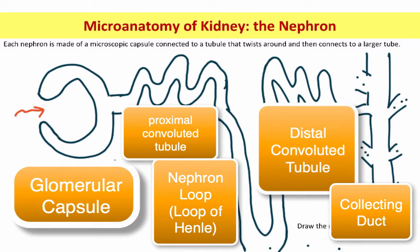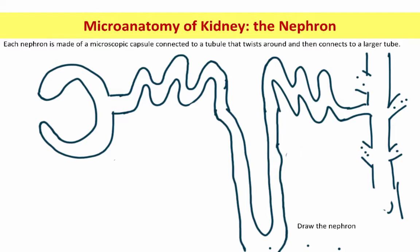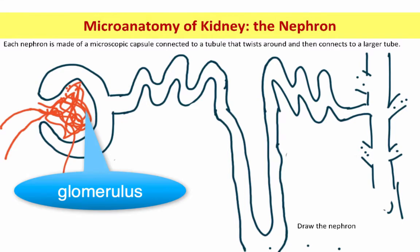Now we have to draw some blood vessels, because the function of the kidney is to filter blood, and the nephron is the filtering unit. We have an arteriole that carries blood into a specialized capillary bed. That capillary bed is called the glomerulus — I believe glomerulus means ball of yarn. The arteriole that carries blood into it is called the afferent arteriole.